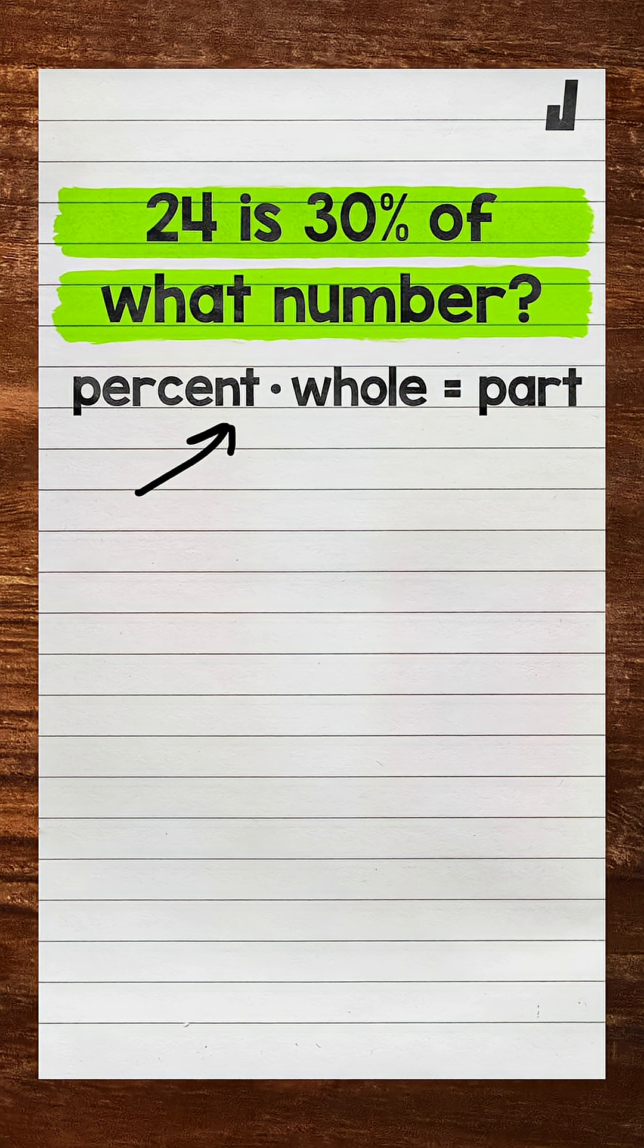Now for this example, our unknown is the whole. 24, the part, is 30% of what number? The whole. Let's start this by writing the equation using variables, and then we will plug in. So P for percent times W for the whole equals A for the part.